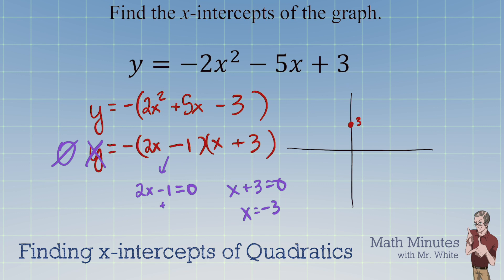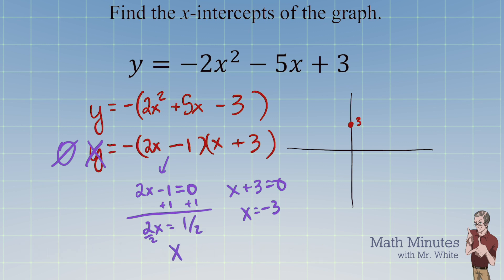For the other factor, 2x equals 1, so dividing by 2 gives x equals one half, which is 0.5. So one x-intercept is at 0.5 and the other is way over at negative 3. We now have three dots on our graph: the y-intercept at 3, and the two x-intercepts.